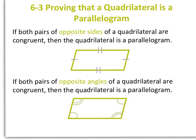Our first property says: if both pairs of opposite sides of a quadrilateral are congruent, then the quadrilateral is a parallelogram.